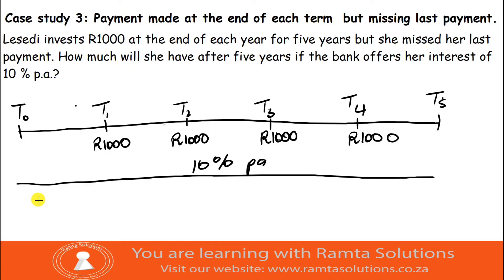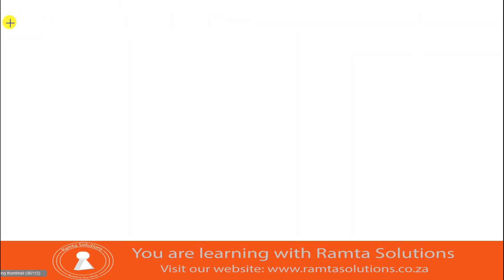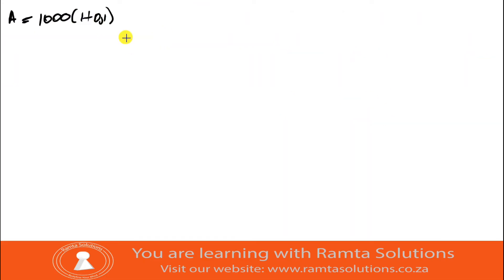To find how much she'll have, remember the accumulated amount equals the principal amount times (1 + i) to the power n. Since she's depositing R1,000 at the end of each year, we consider this an annuity — equal payments made at regular intervals. The first R1,000 earns interest at 10% (i = 0.1) and is in the account for four years, so it's to the power four.